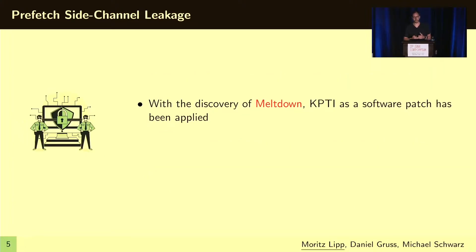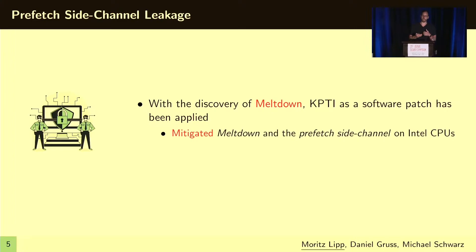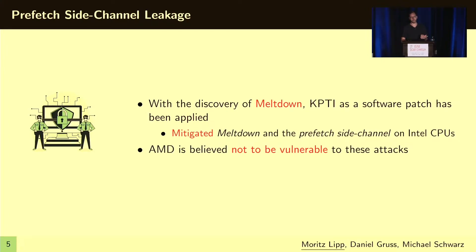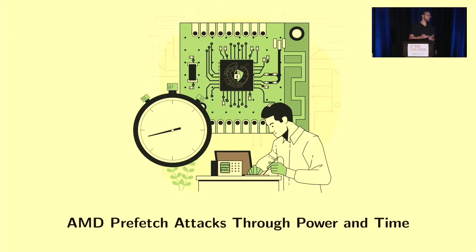However, with the discovery of Meltdown, stronger page-table isolation has been applied as a software mitigation — on the one hand against Meltdown attacks, and also against the prefetch side-channel attacks that were presented back then. AMD is believed not to be vulnerable against these attacks, so KPTI is not active on AMD. In our work, we want to revisit that assumption and see what type of information we can leak using prefetch on AMD CPUs.